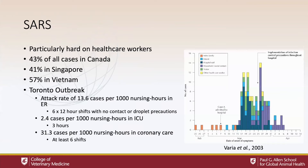The iconic template case for nosocomial amplification is SARS, which was particularly hard on healthcare workers. 43% of all cases in Canada were in healthcare workers, 41% in Singapore, and 57% in Vietnam. There was an outbreak in a hospital in Toronto that's really emblematic of this problem. Early in the epidemic, we have single cases in an index family. One is admitted to the hospital, and shortly thereafter there's a very sharp spike in cases, many of them in hospital staff, other patients, or visitors, taking place before infection control established contact precautions.